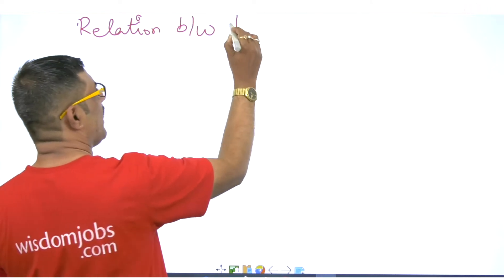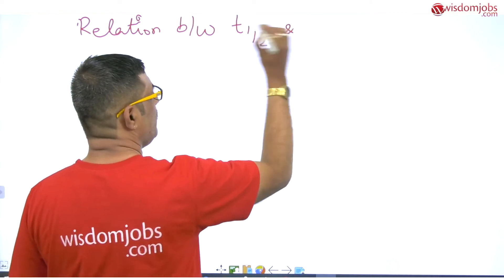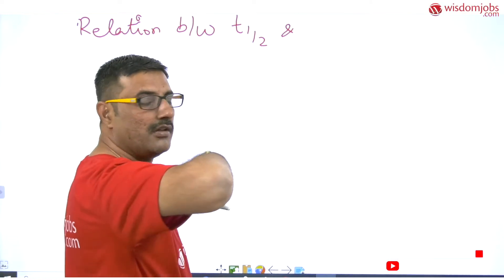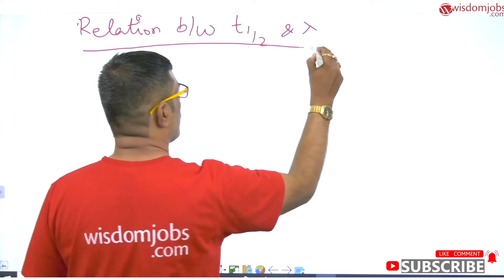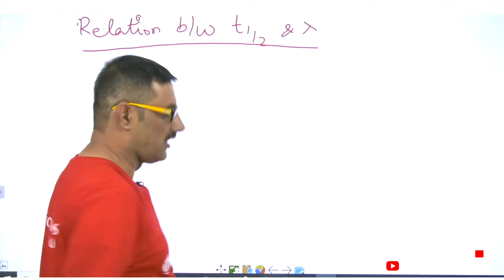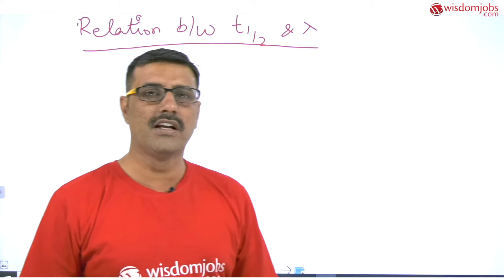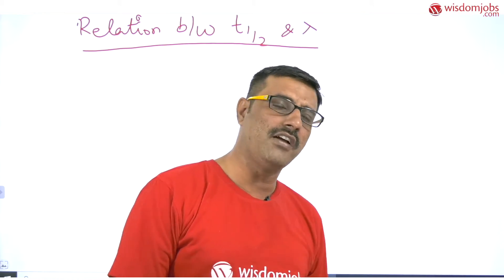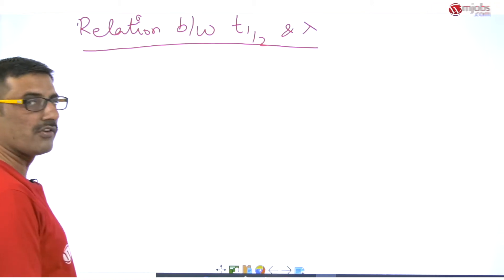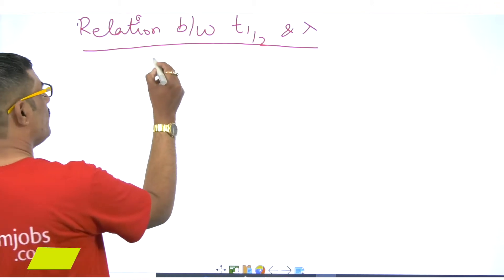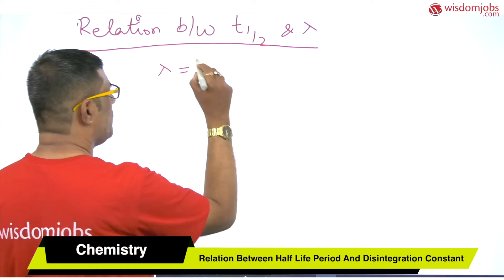The topic for today's video is the relation between t-half, that is the half-life period, and the disintegration constant lambda. In the last video we derived an expression for lambda, the disintegration constant. So what was the expression for the disintegration constant?